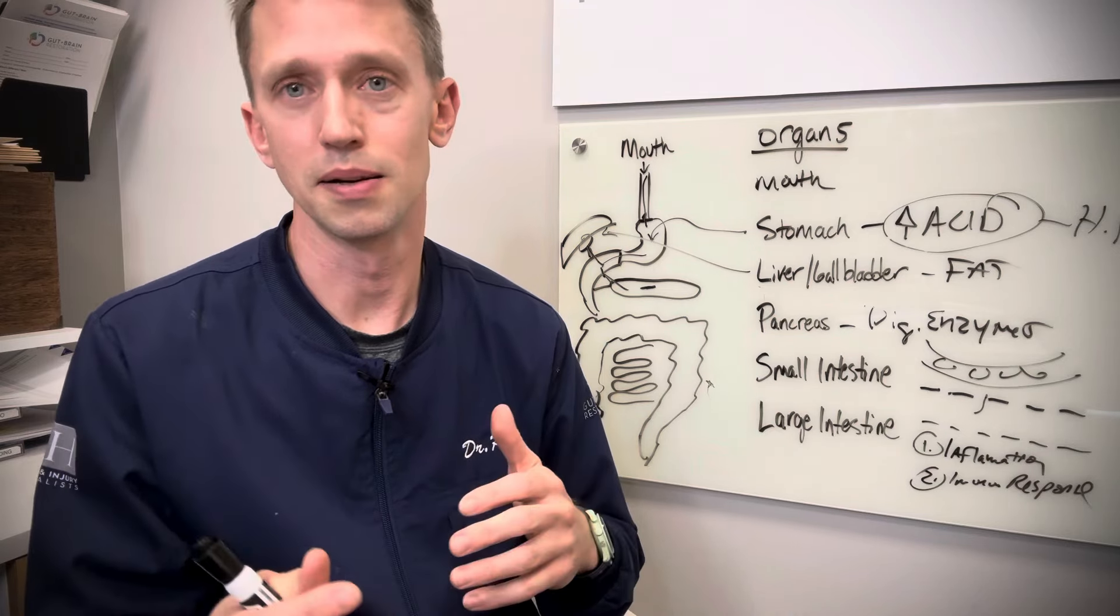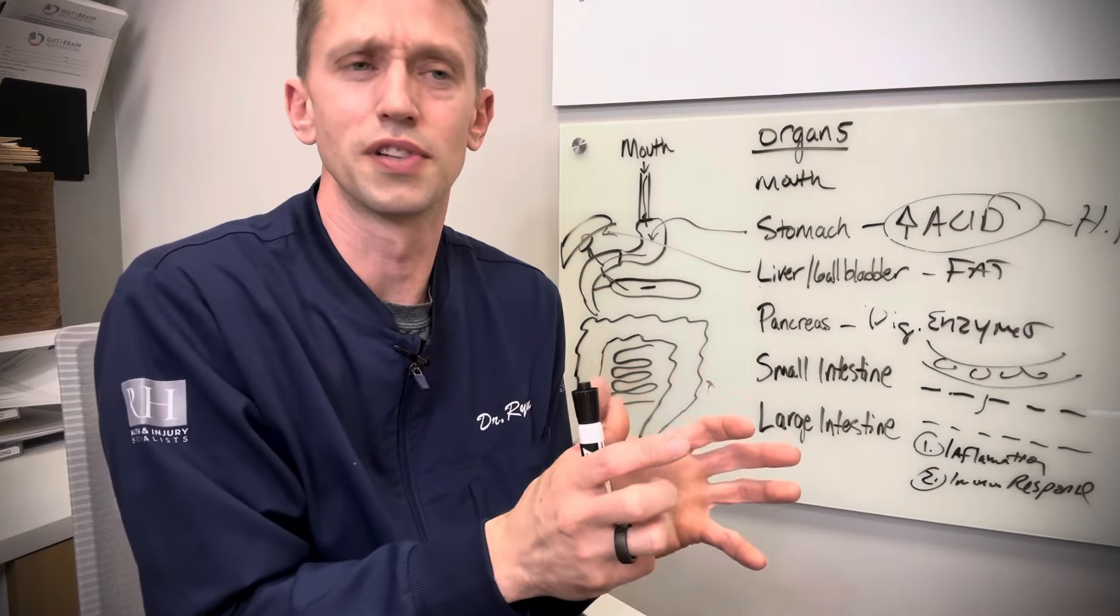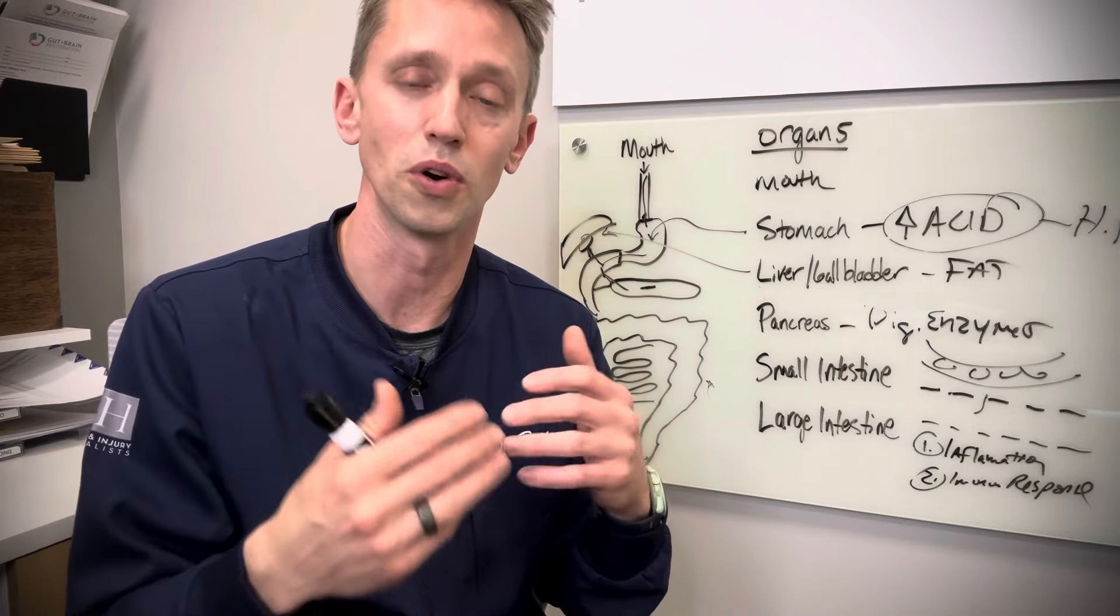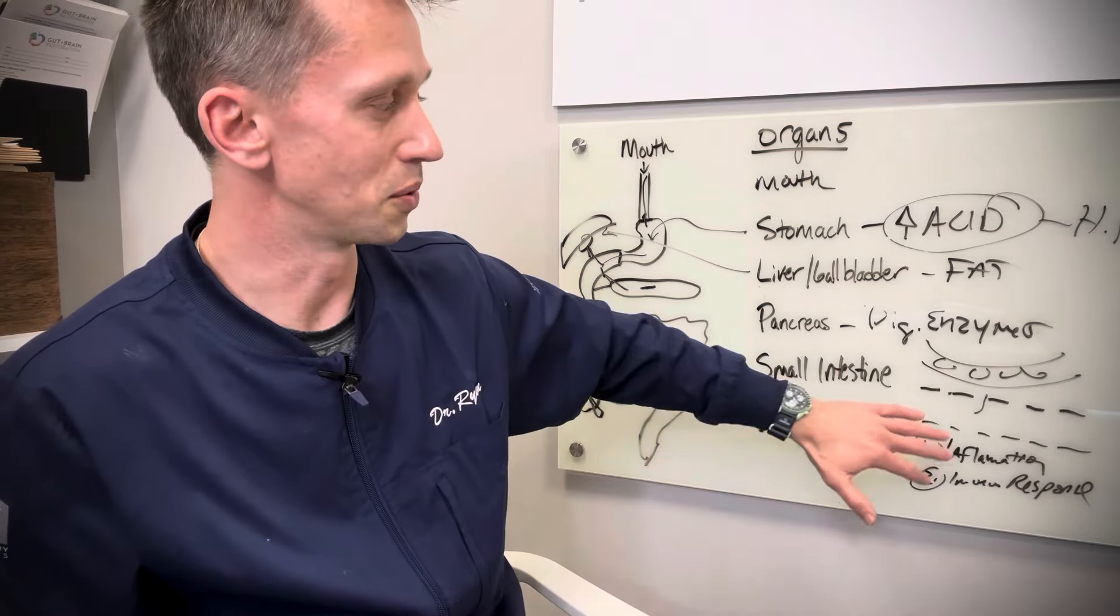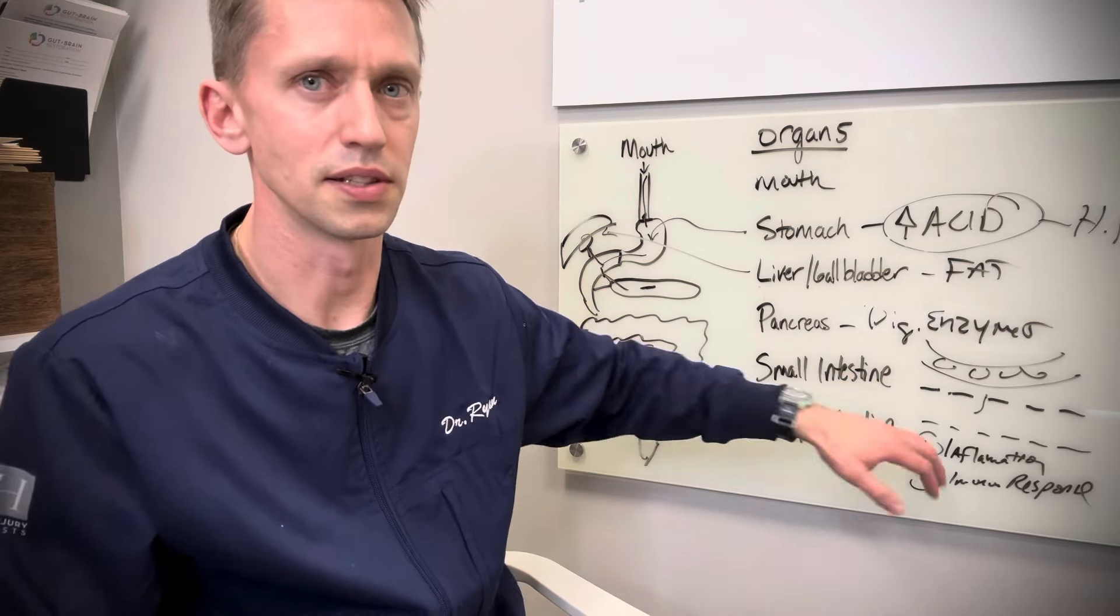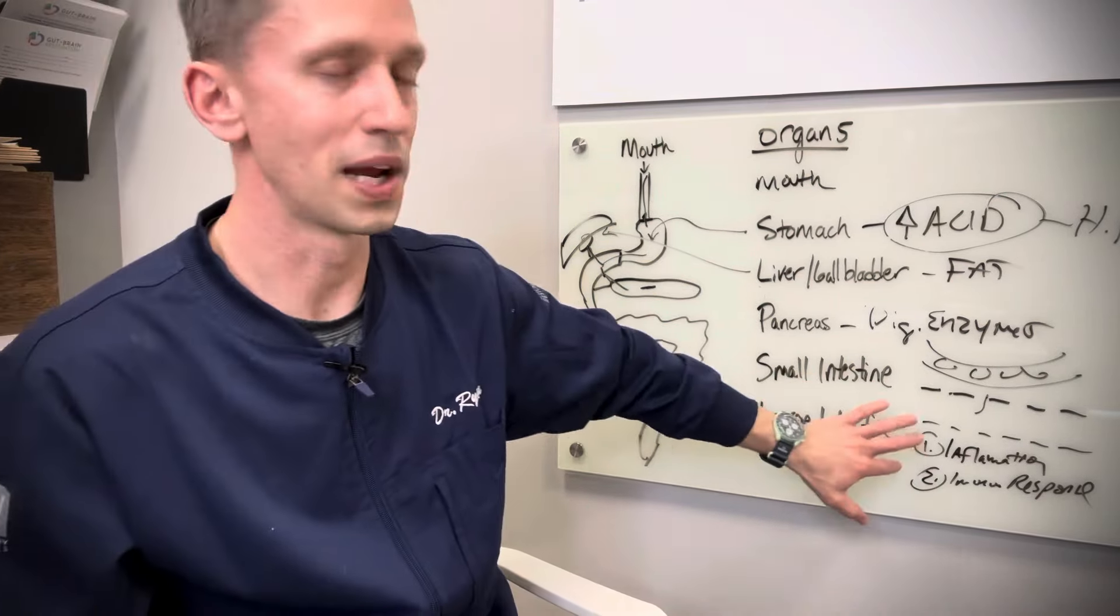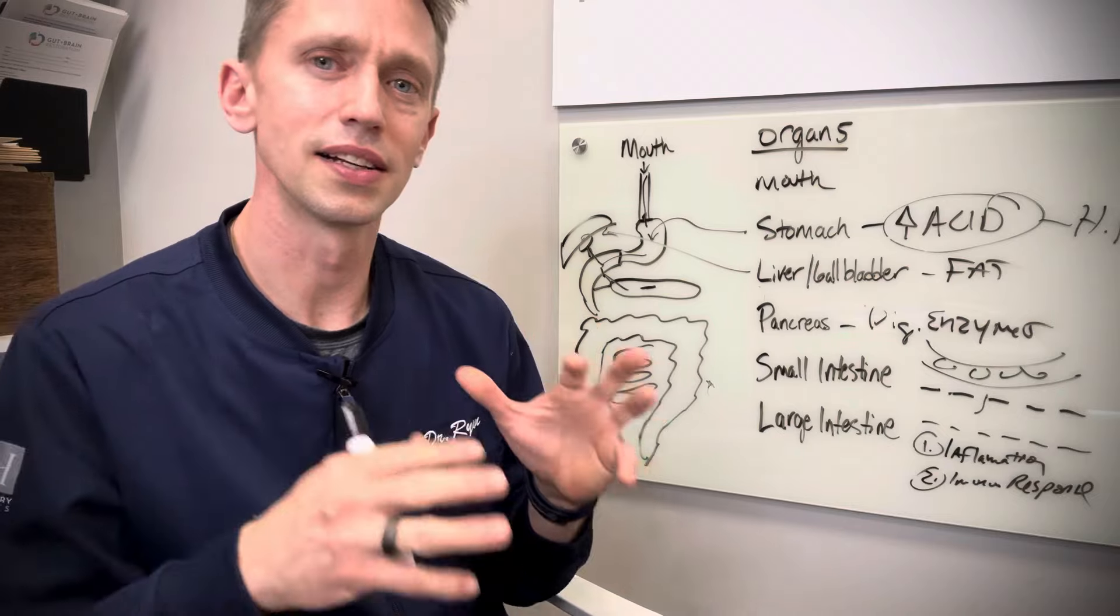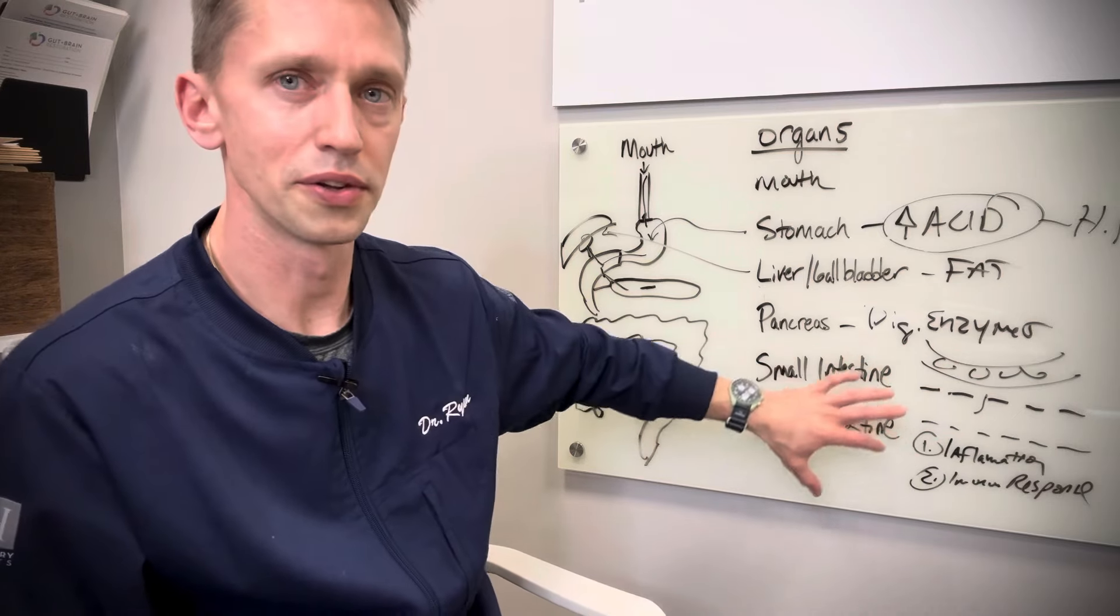Autoimmune disorders like MS, you have rheumatoid arthritis, ulcerative colitis. These autoimmune disorders, research is now getting further and further and more and more into showing a really strong correlation between gut issues and autoimmune disorders. Of course, inflammation makes sense because your body's going to react negatively and your arthritis is going to get worse. Your pain levels are going to get worse because of inflammation. So leaky gut, intestinal permeability, this is a big, big reason that people are having health issues.